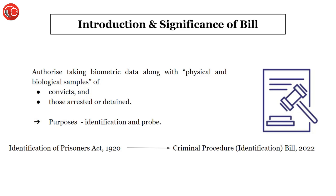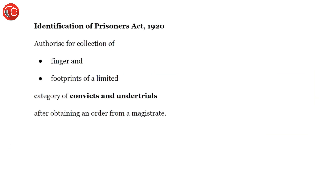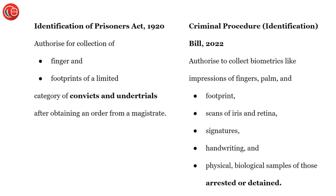An important point here is that previously we had the Identification of Prisoners Act 1920, which was an existing law. The Criminal Procedure Identification Bill 2022 will replace that law. If we look at the old law — which is still in existence — it authorized collection of finger and footprint impressions, but only for a limited category of convicts and undertrials. Also, it was mandatory to obtain an order from the magistrate before collecting this data.